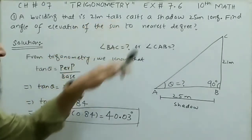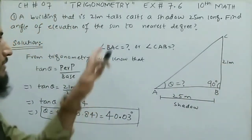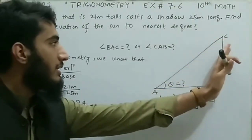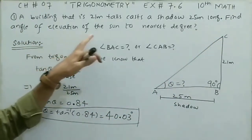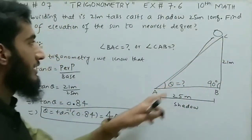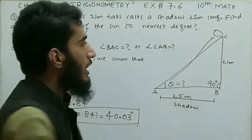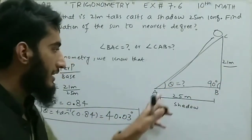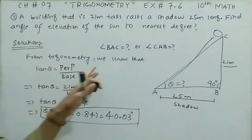Question number 1: A building that is 21 meters tall casts a shadow of 25 meters long in front of it. Find the angle of elevation of the sun to the nearest degree. Let's suppose this is the building; its vertical distance is 21 meters and the shadow is 25 meters long. The side opposite to theta is called perpendicular (21m) and the shadow side is called the base (25m). We will use tangent theta from trigonometry.